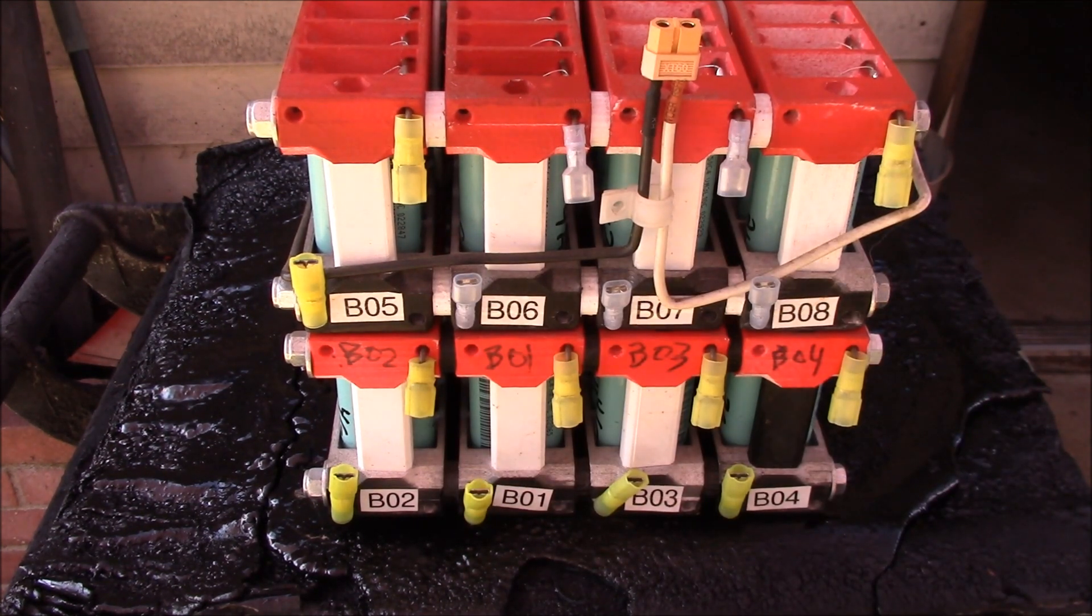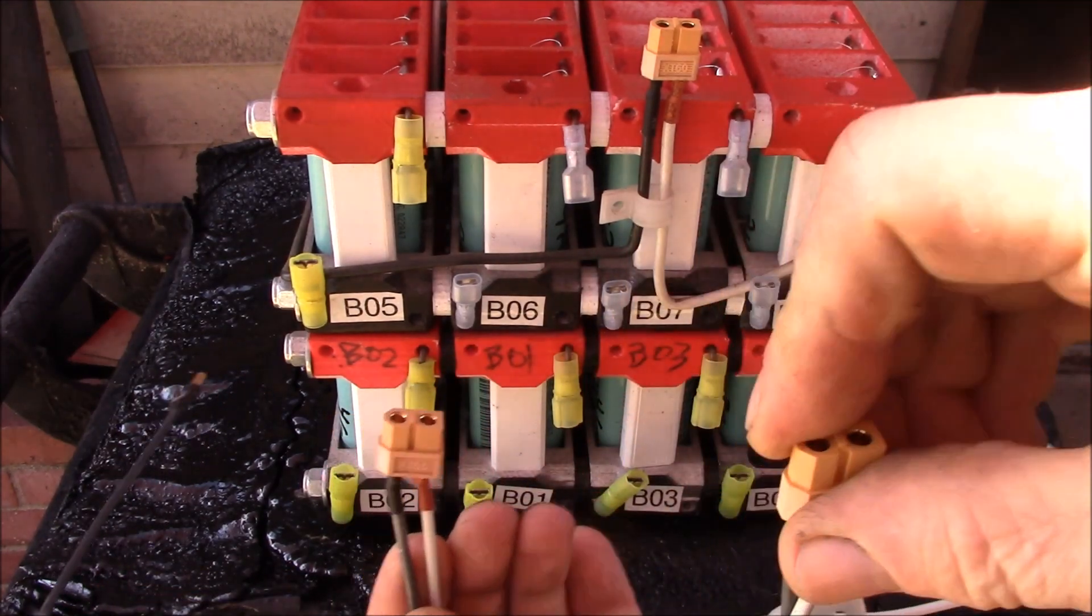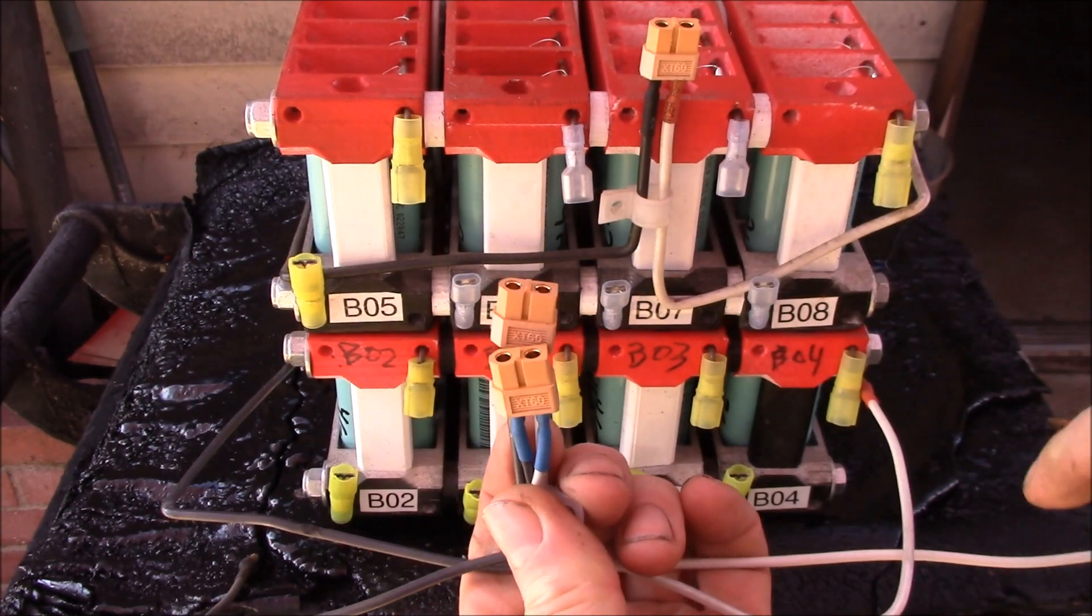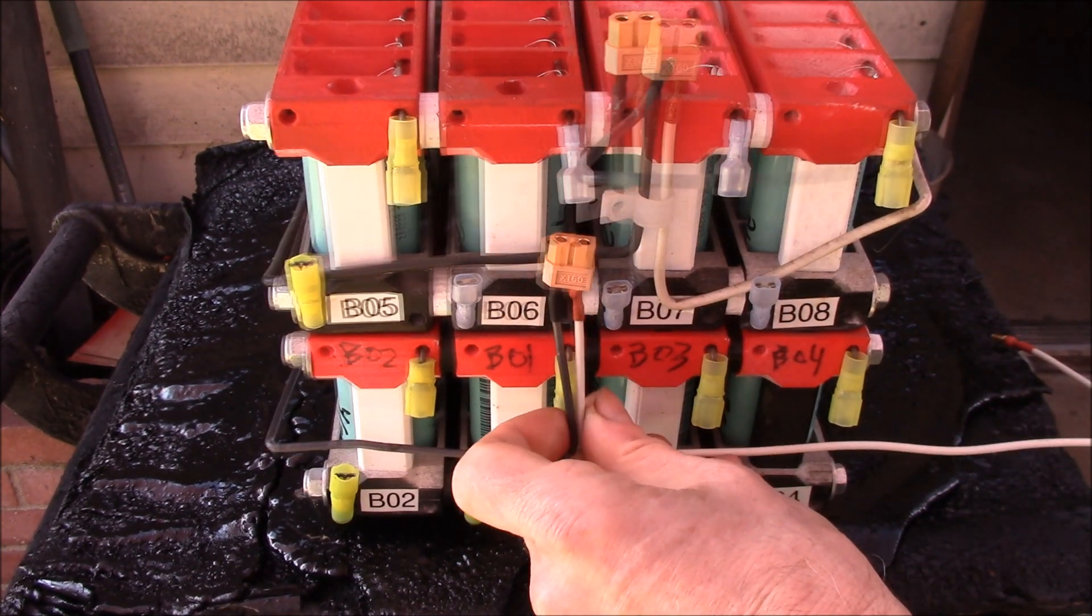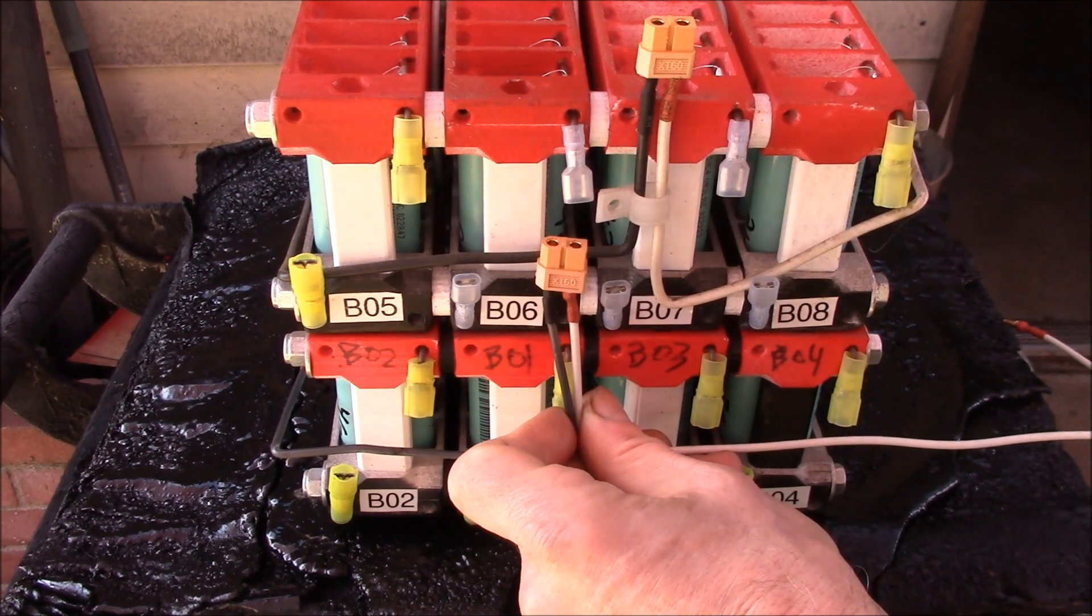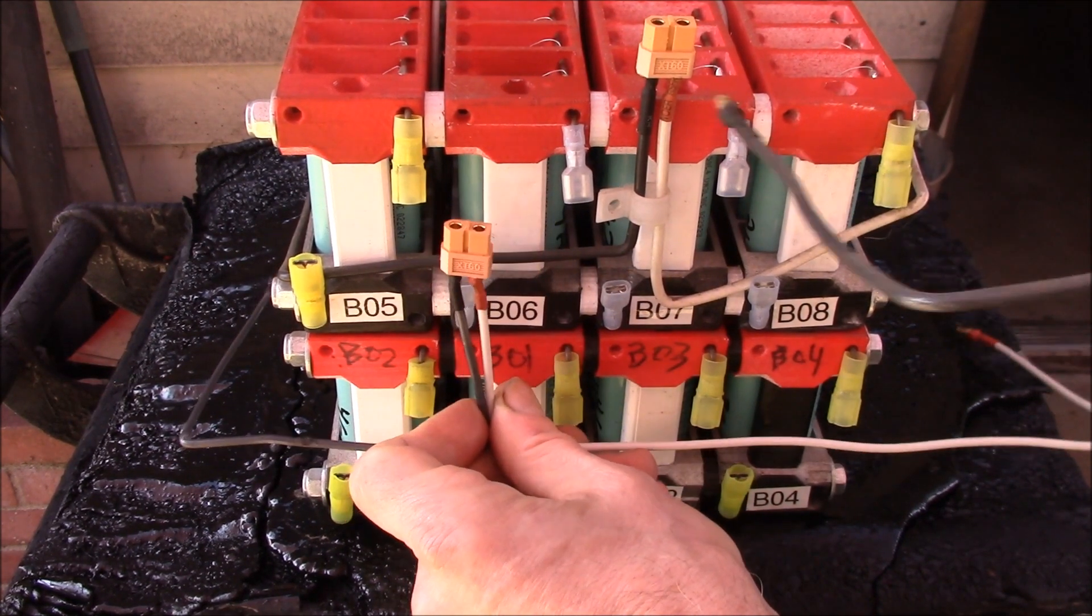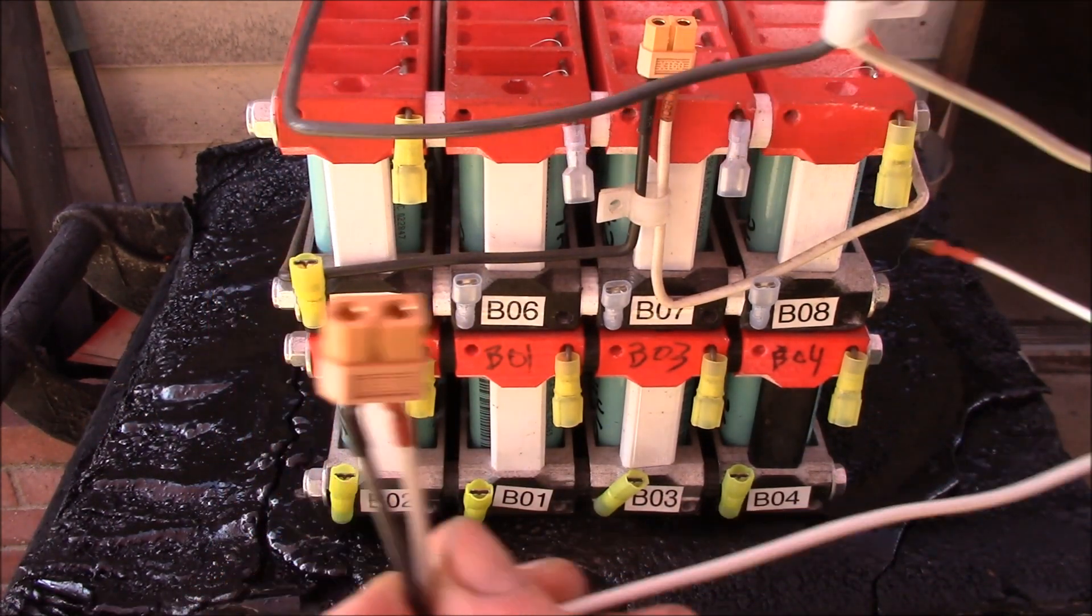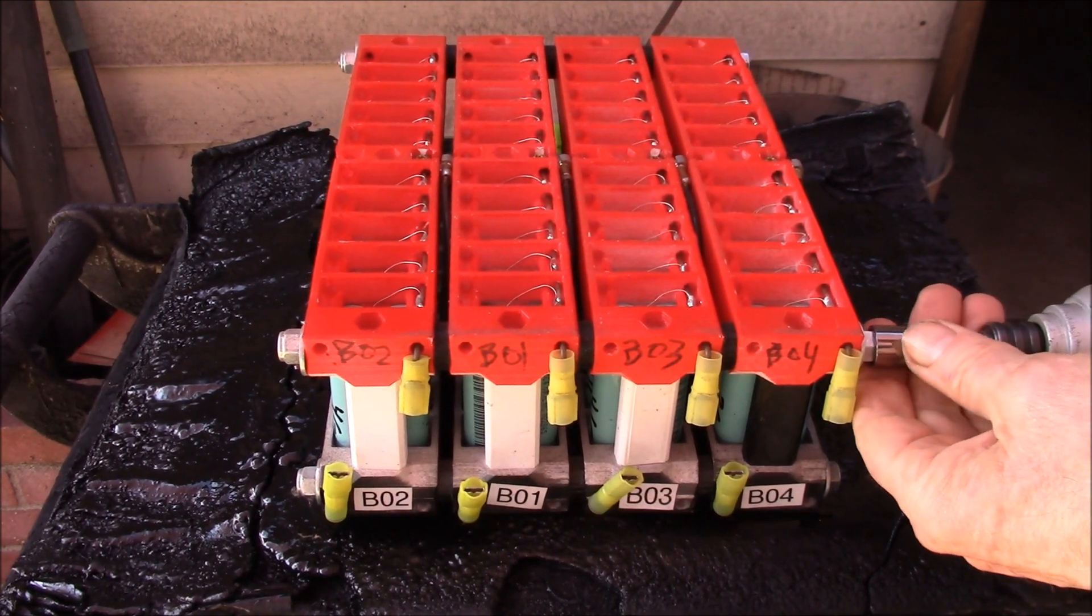So one thing I'm doing on the 7s batteries is every other one of these I'm going to alternate whether I swap out the black side or the white side, so I'll have the power connectors offset by a few battery modules so that way the wires don't get tangled up.